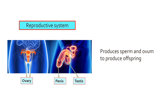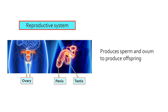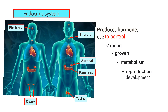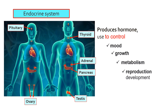The reproductive system produces sperm and ovum to produce offspring. Endocrine system: organs involved are the pituitary, ovaries, thyroid, adrenal glands, pancreas, and testes. The endocrine system produces hormones used to control mood, growth, metabolism, and reproductive development.